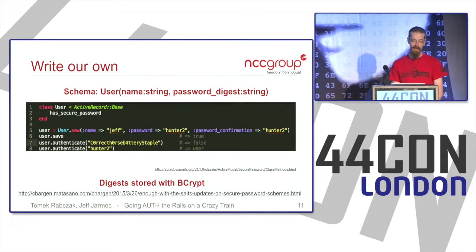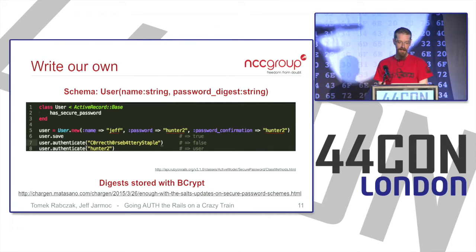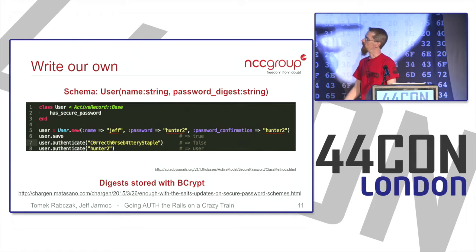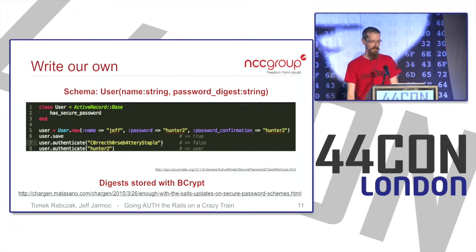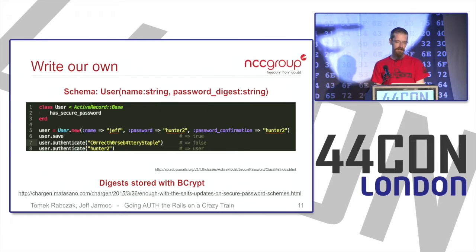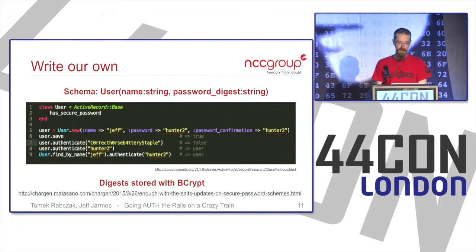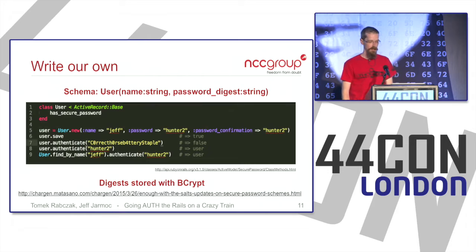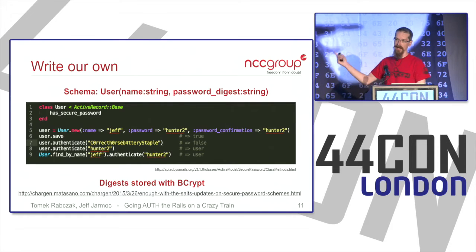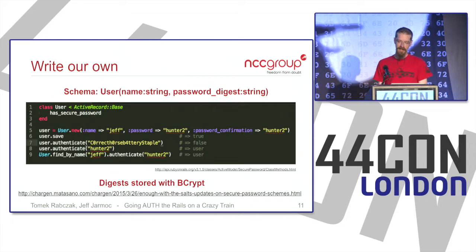Another thing we get from has_secure_password is an authenticate method, added by the helper. It's straightforward: call user.authenticate with the wrong password and it returns false; with the correct password, it returns the user object itself. In Ruby, objects are truthy, so an if-check validates as true. Combined with ActiveRecord's database finders, you can do something like user.find_by(name: name).authenticate(password) — a really straightforward authentication method.